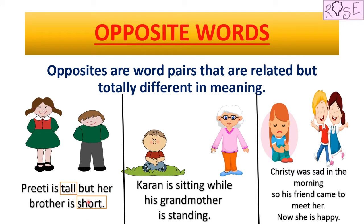Let us look at the next picture and read the sentence given below it. Karan is sitting while his grandmother is standing. In this sentence there are two words describing the posture of our body — sitting and standing. Both these words have different meanings, so they are opposite words. Sitting and standing.